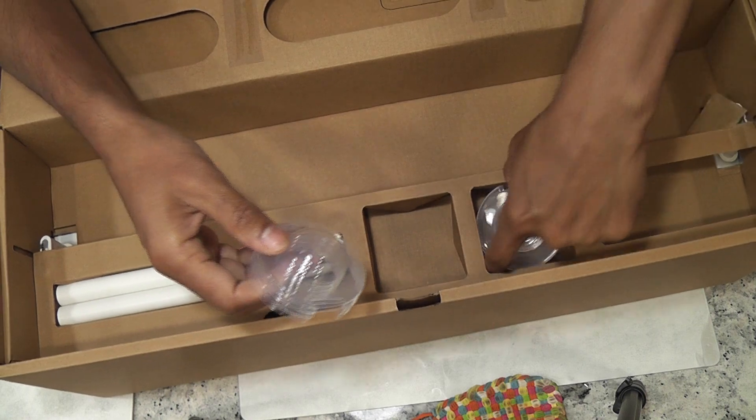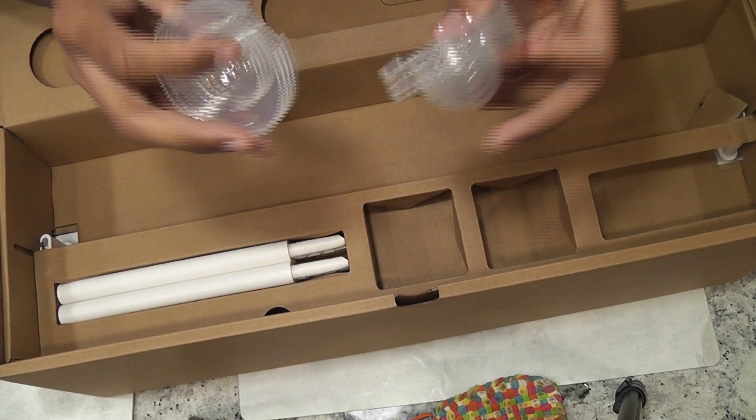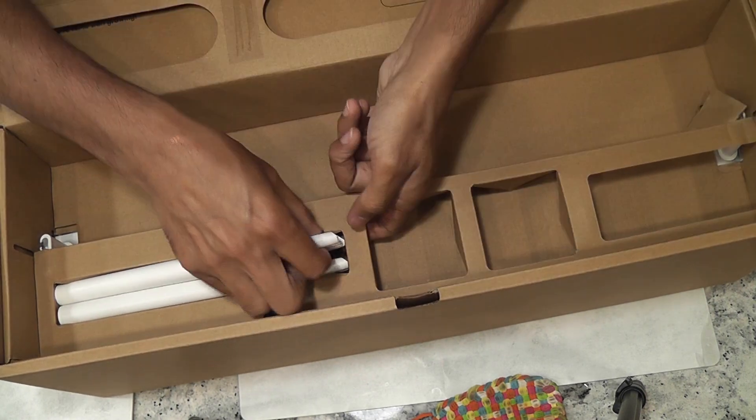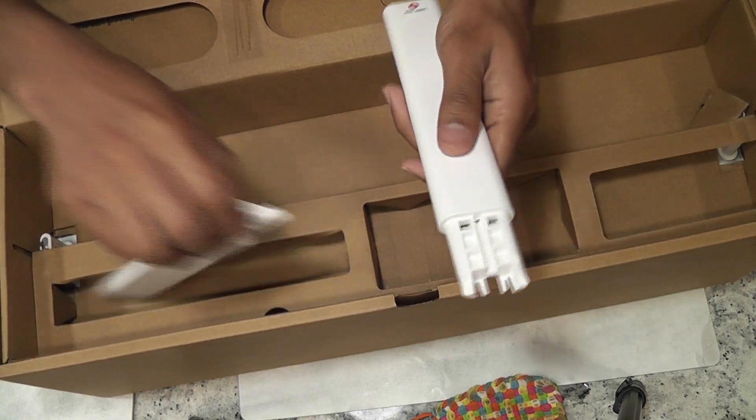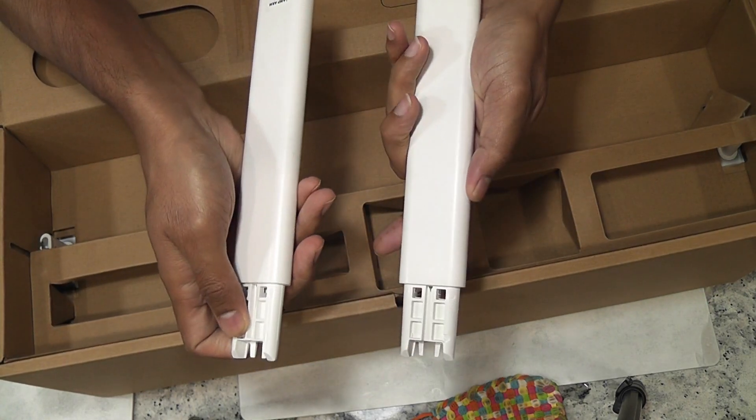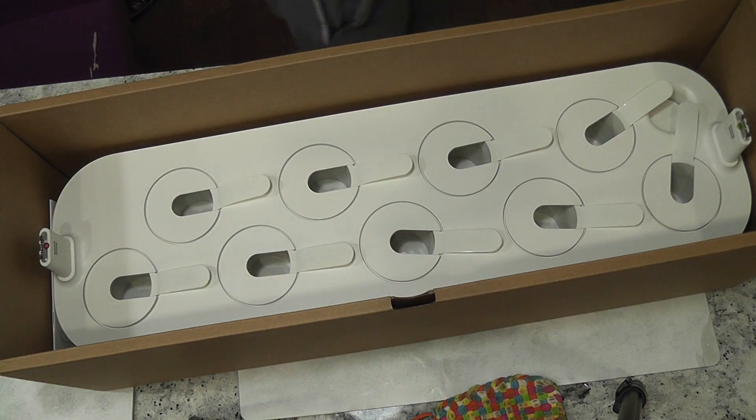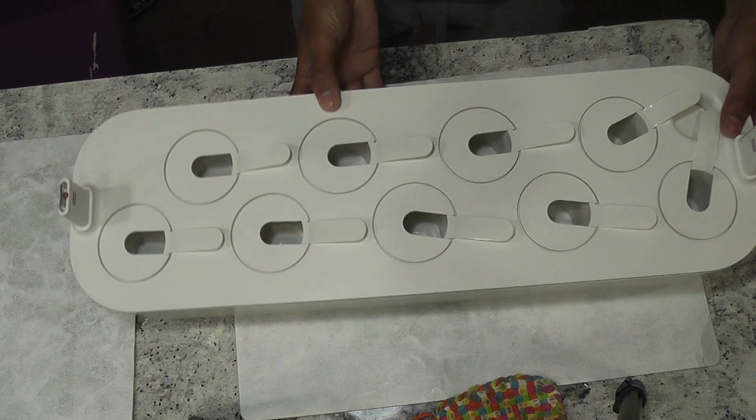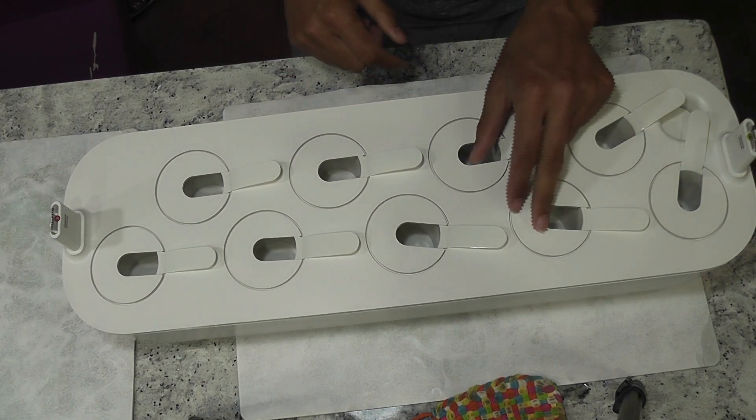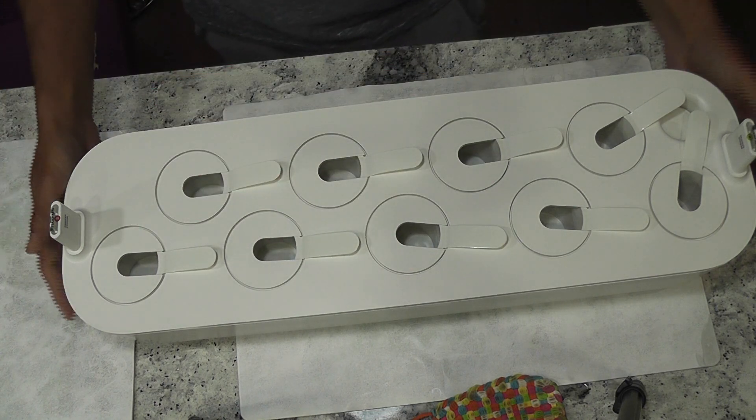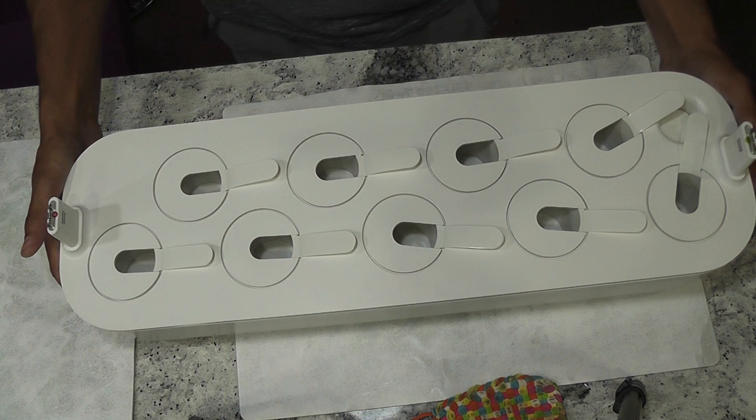Then the germination domes that go on the pods. Then the light extensions called arms. And the bowl along with the grow deck. This is a four liter water tank with nine pod grow deck, and it is made with ABS plastic.